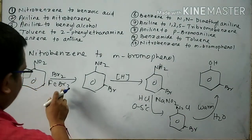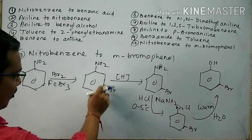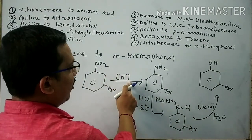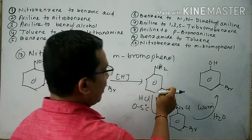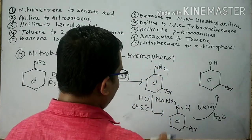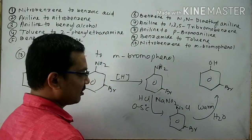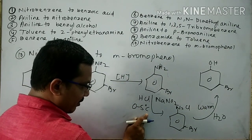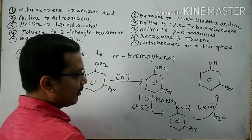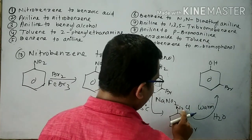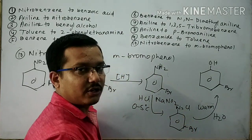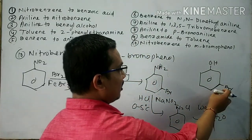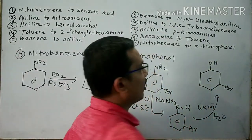To repeat: nitrobenzene undergoes bromination to form meta-bromonitrobenzene. Meta-bromonitrobenzene undergoes reduction to give meta-bromoaniline. Meta-bromoaniline reacts with NaNO2 and HCl at 0 to 5 degrees centigrade, converting NH2 to N2Cl. This product reacts with water under warming conditions to give meta-bromophenol.